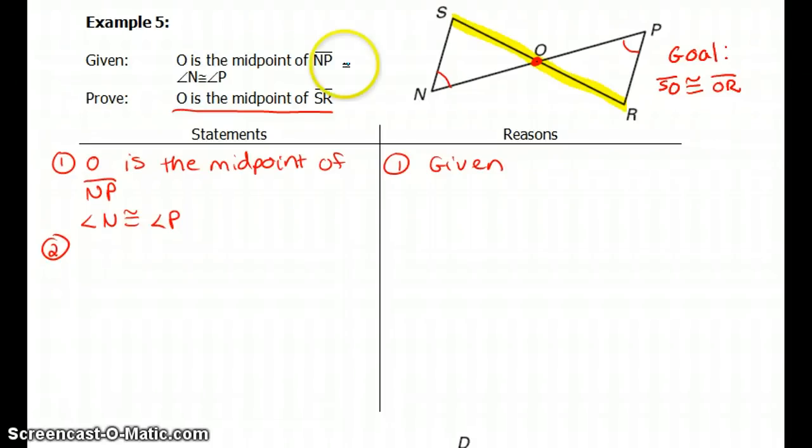So let's go back to our given. It says O is the midpoint of NP. So NP, we already know that the middle of that is O. So here, the first thing I can say is that NO must be congruent to OP.